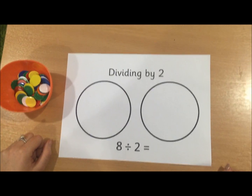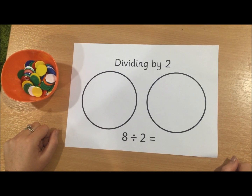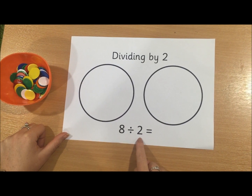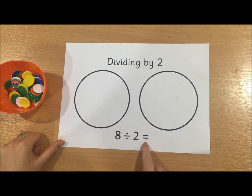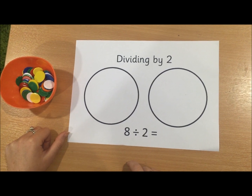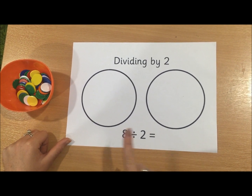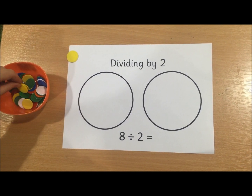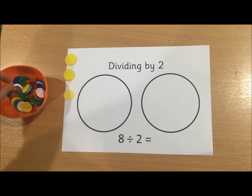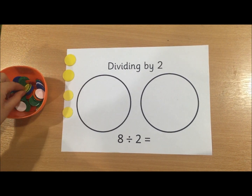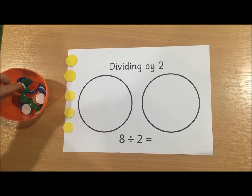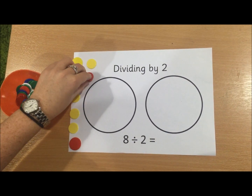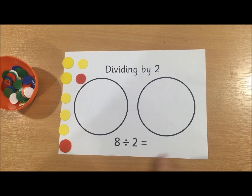Today we're going to be learning to divide. The first thing we need to do is read the calculation: 8 divided by 2 equals. Once we've done that, we need to make the first number. The first number is 8, so we're going to make it using counters — one, two, three, four, five, six, seven, eight.